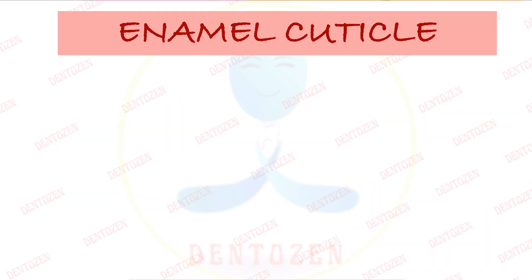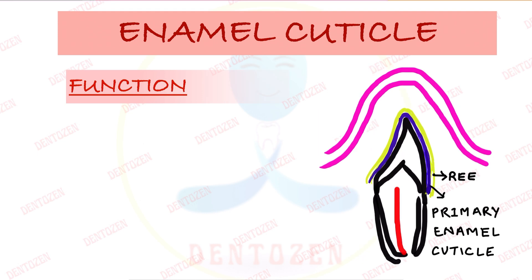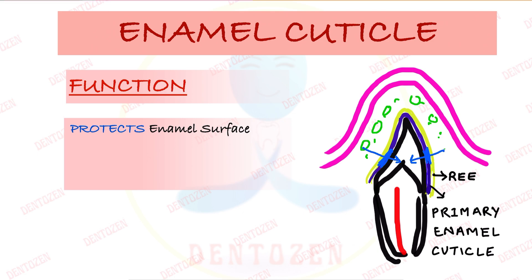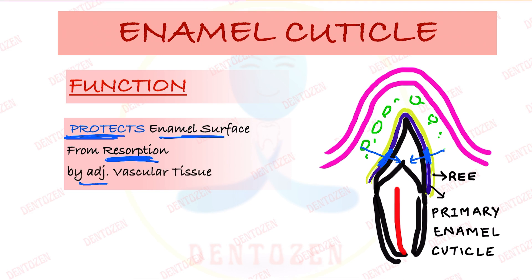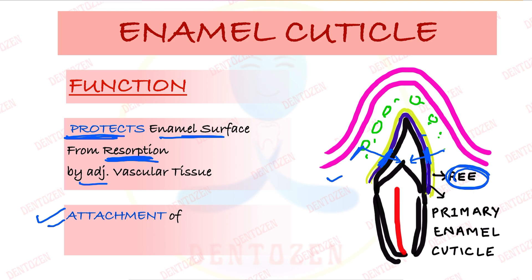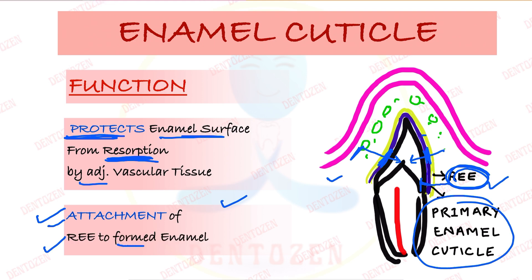What is the function of this cuticle? When the tooth has formed but not yet erupted, it is surrounded by mesodermal tissue containing blood vessels whose cells could damage the enamel. So the first function of the cuticle is to protect the enamel surface from resorption — from being destroyed by adjacent vascular tissue. A second function is to help in the attachment of the reduced enamel epithelium to the enamel.